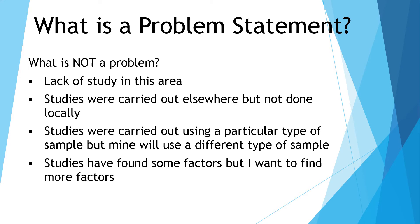Number one is lack of study in this area. Some research students say this is an area, tool, or field they want to study because there isn't any study. But lack of study in an area is not a problem by itself. You have to ask yourself: is this actually a problem? Why is there no study here? It could be that the expected contribution is not significant, there is no need for a study, or maybe it is an area that cannot be researched. So you have to think about all these possibilities seriously before claiming lack of research as your problem.